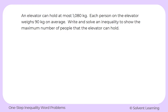For our first word problem: an elevator can hold at most 1,080 kilograms. Each person on the elevator weighs 90 kilograms on average. Write and solve an inequality to show the maximum number of people that the elevator can hold. We want to figure out how many people an elevator can hold, and they tell us the weight it can hold at most. The first sentence says the elevator can hold at most 1,080 kilograms, so let's use that to start setting up our inequality.